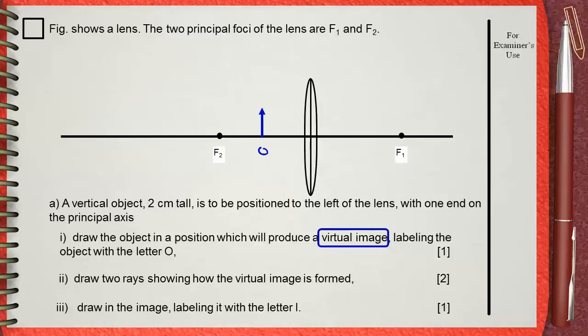Let's start our ray diagram. Two rays are needed here. From the top of your object, draw a light ray that is parallel to the principal axis, until this ray meets the center of the lens.